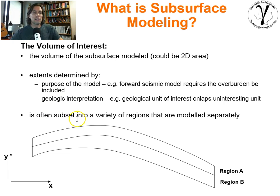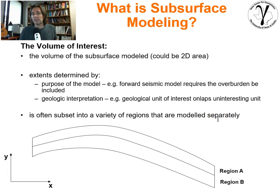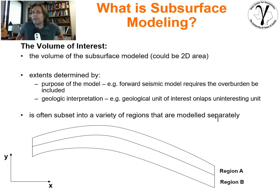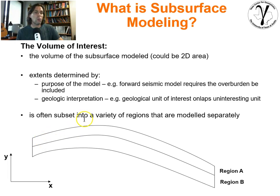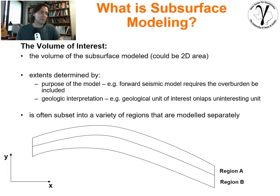The volume of interest is often going to be subset into a variety of regions that are modeled separately. The regions may all have different statistical distributions — including univariate, bivariate, spatial, and even higher-order multivariate. They may change dramatically between regions, so we want to treat each of them separately. We start with some volume of interest broken up into separate regions, each with different statistical properties and geologic concepts.